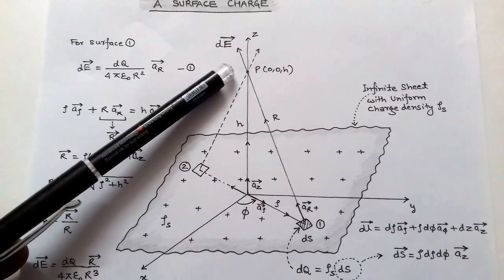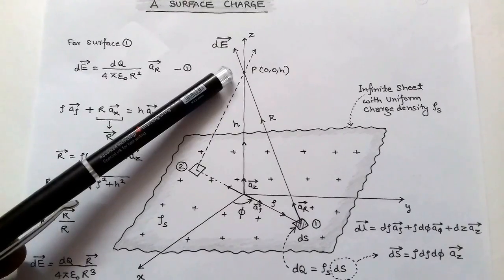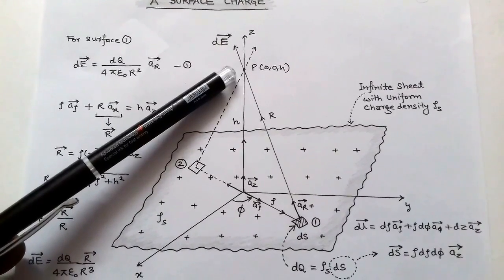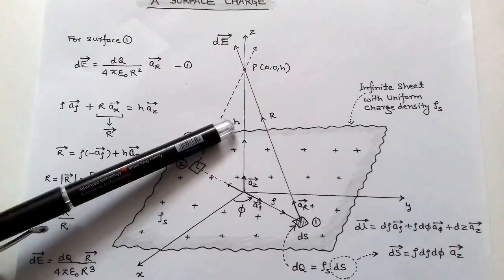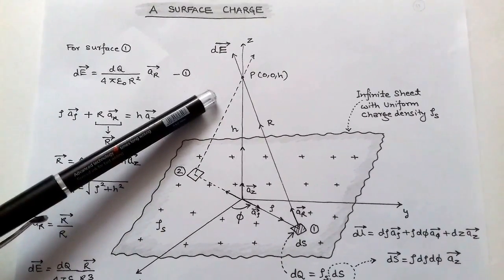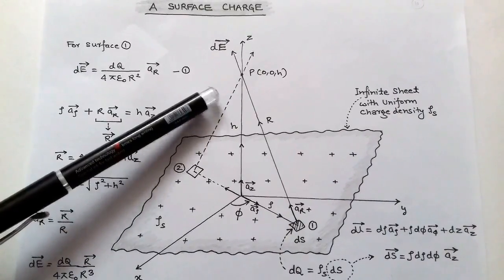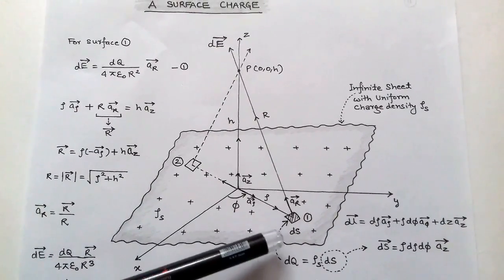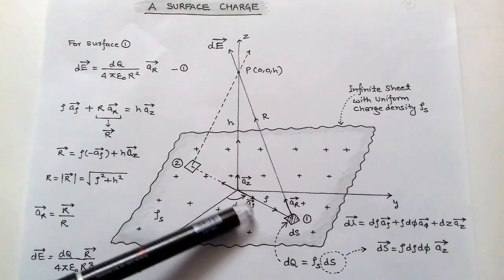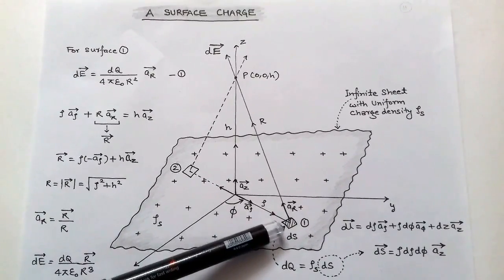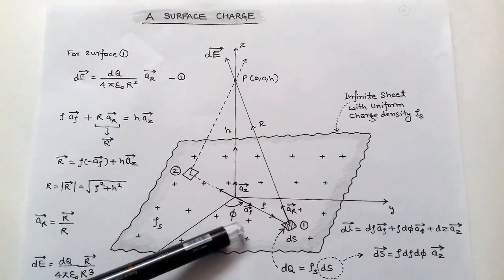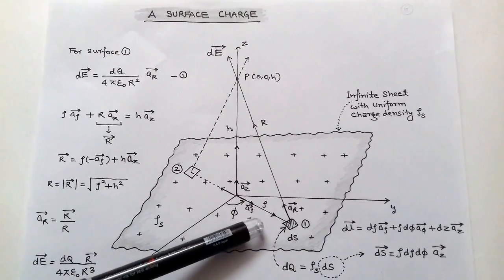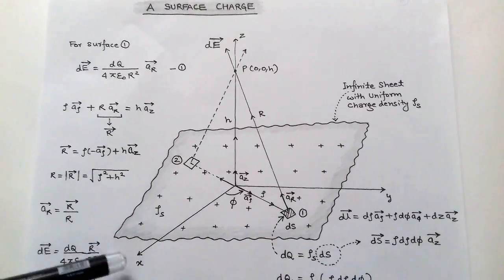The coordinate of point P is on the z-axis, meaning the x and y coordinates are 0 and this point has some height h. So the coordinate is (0, 0, h). The first step is to consider a small differential surface ds on this infinite sheet. This ds is at some distance ρ from the origin with unit vector â_ρ, and ρ makes some angle φ with respect to the x-axis.